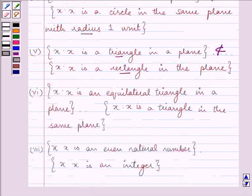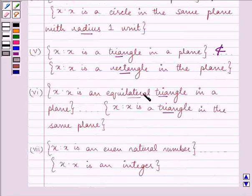X such that X is an equilateral triangle, and X such that X is a triangle in the same plane. Equilateral triangle is a form of triangle only, so we can say that this is a subset of this set.